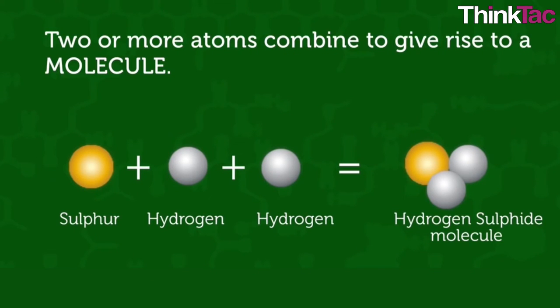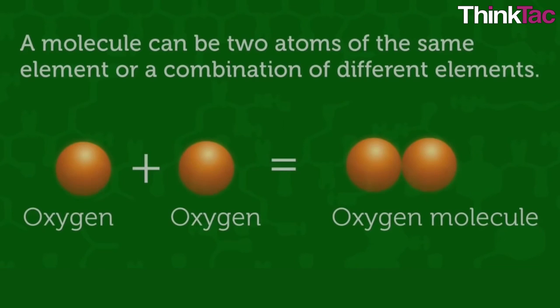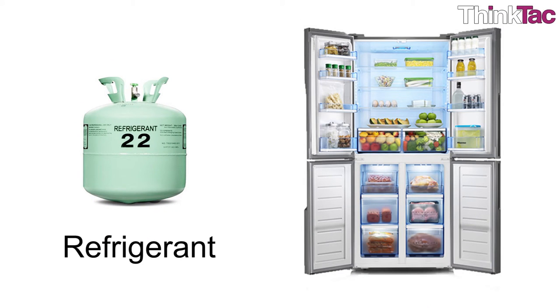A group of atoms bonded together is called a molecule, representing the smallest fundamental unit of a chemical compound that can take part in a chemical reaction. And a refrigerant is a substance used for refrigeration.